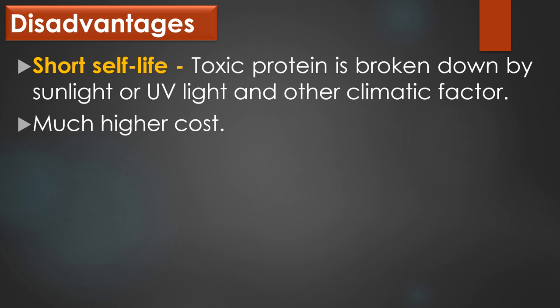Disadvantages of Bacillus thuringiensis: there are two disadvantages. First, short shelf-life and remains effective for short periods because the toxic protein is broken down by sunlight or UV light and other climatic factors. Second, much higher in cost. That's all about the entomopathogenic bacteria Bacillus thuringiensis. Dear viewers, thank you for your support.